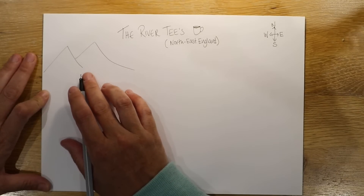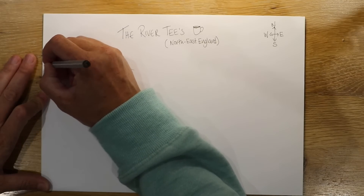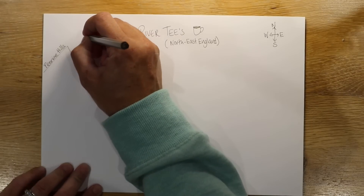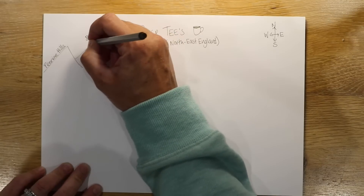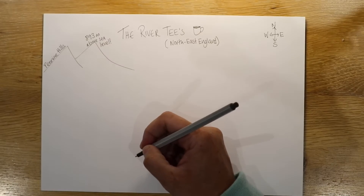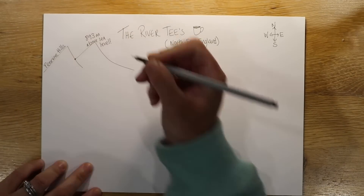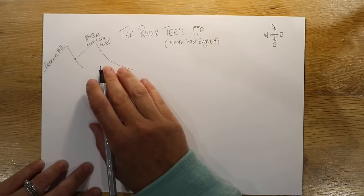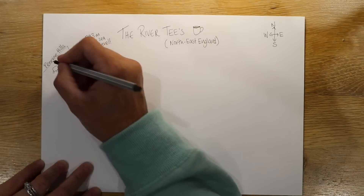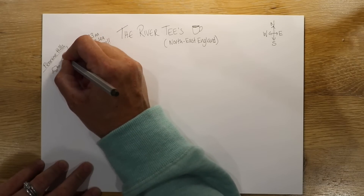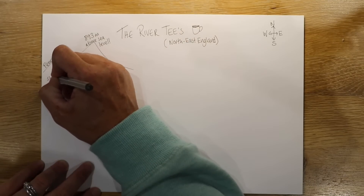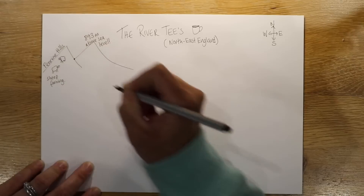So it starts up, as all rivers do — the source starts up in the Highlands. This is actually in the Pennine Hills, at quite a high peak of 893 metres above sea level. It's really very high. Now this is an area that's very high up but it's also used by humans for things like sheep farming. That is my small sheep — so kind of sheep farming, those kinds of activities to earn some money.